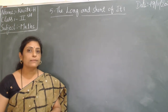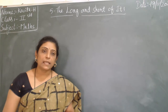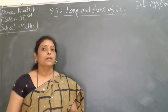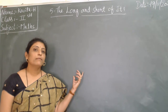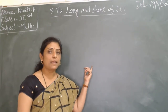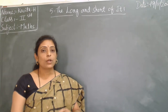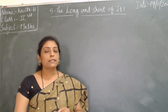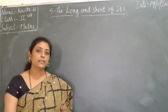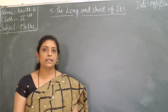Those two fixed measures are centimeter and meter. Centimeter in short we write as cm — cm means centimeter. Meter in short we write as m — m means meter. Is it clear, children?